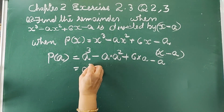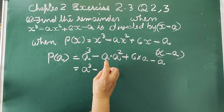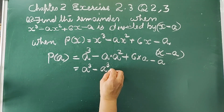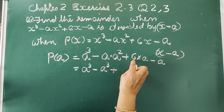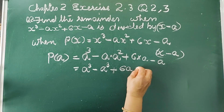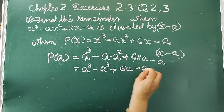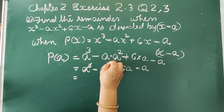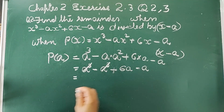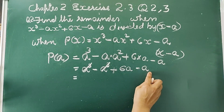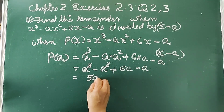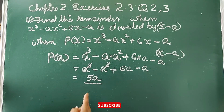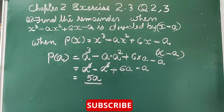p(a) is equal to a cubed minus a into a squared plus 6 into a minus a. That is a³ - a³ + 6a - a. The a cubed terms cancel, giving 6a - a which is 5a. So the remainder is 5a.